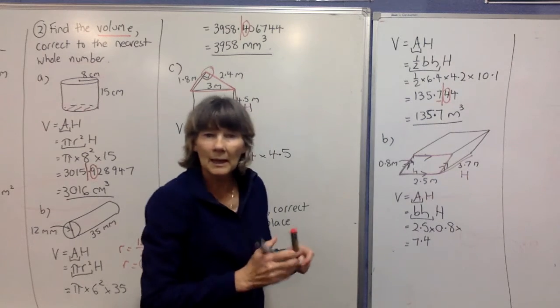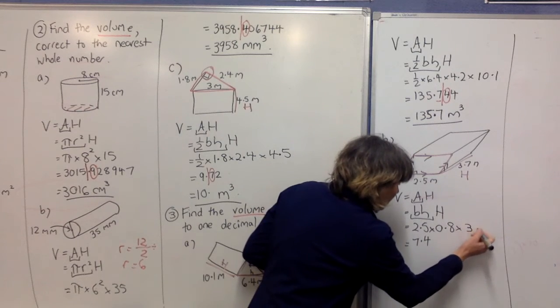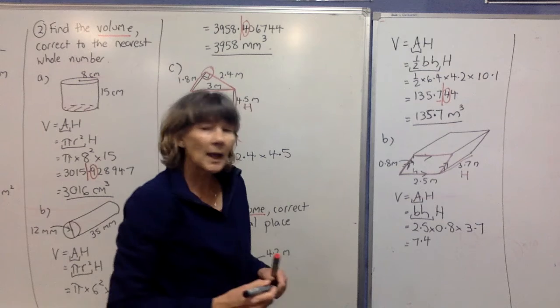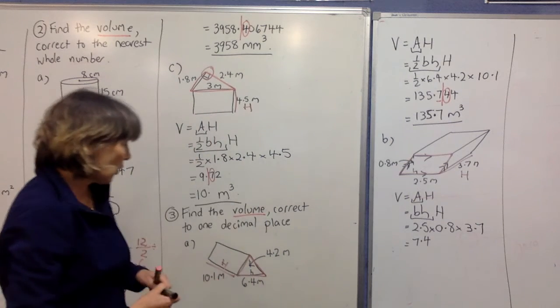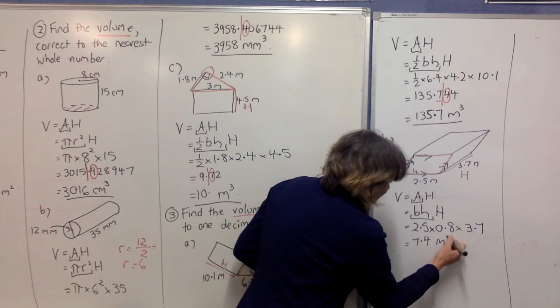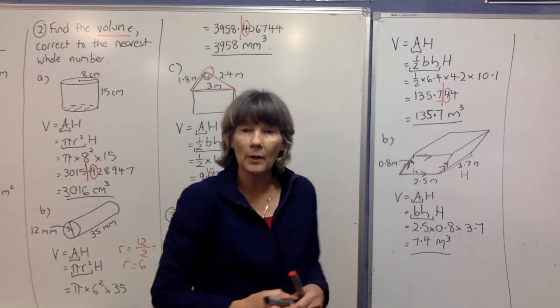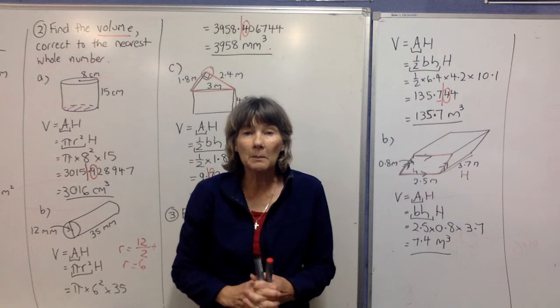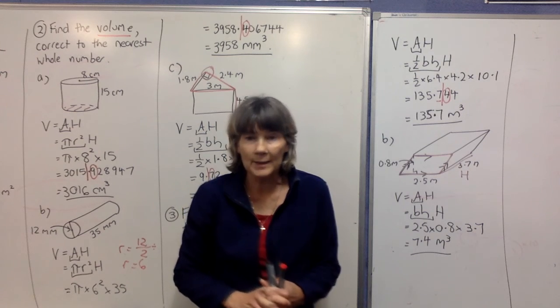Now the perpendicular height of the prism comes away from the base shape, so the 3.7 is your perpendicular height of your prism. The calculator will give you 7.4, and that's already to one decimal place, so you can leave it and just write meters cubed on the answer. We're going to come back in a minute and do another video showing a few more examples.